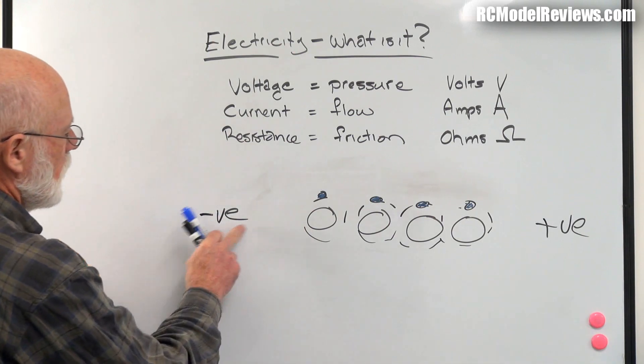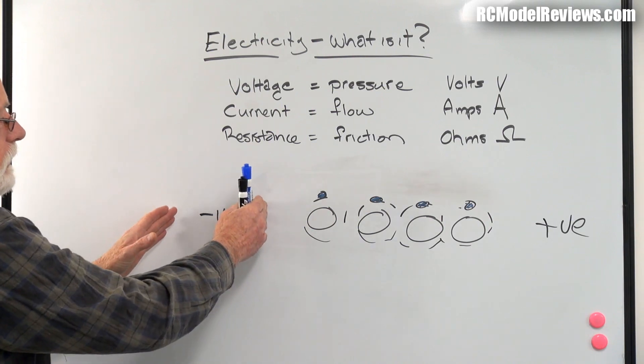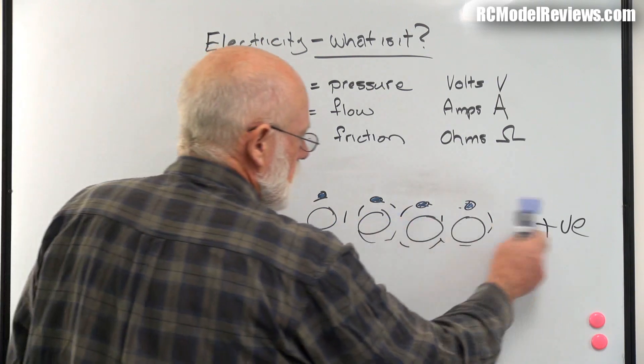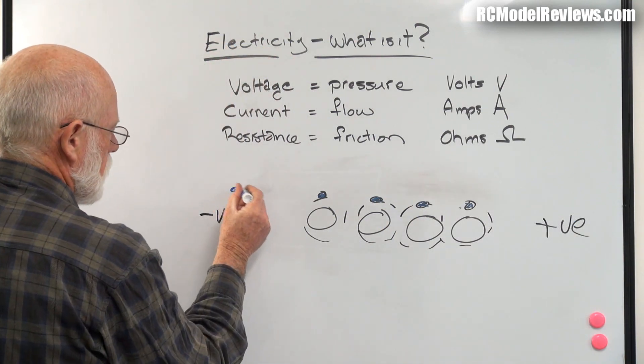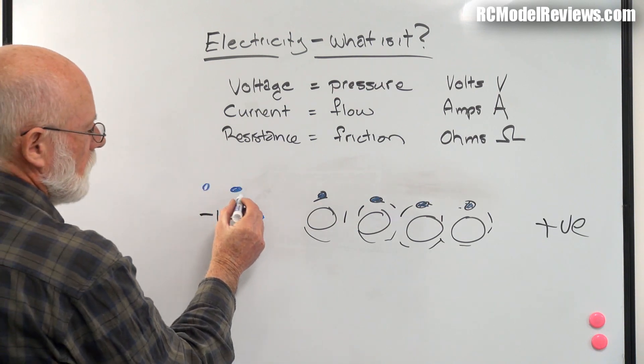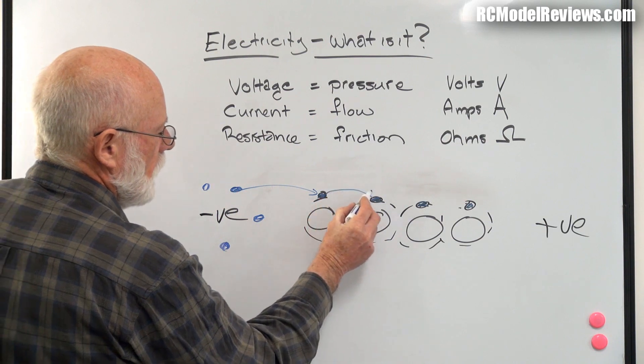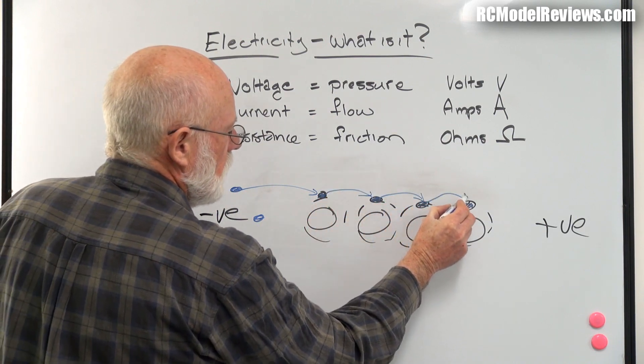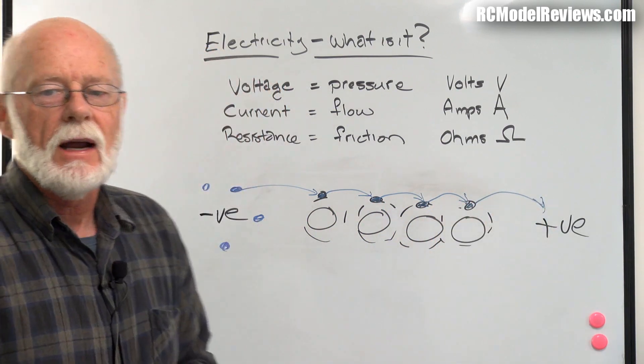Nature always likes to balance - surpluses flow into deficits. The extra electrons on the negative side want to flow through the conductor to the positive side. What do they do? The extra electrons will jump - this one will jump to there and in doing so it will displace that one to there, which will displace that one to there, and so forth.